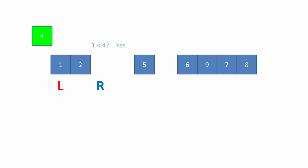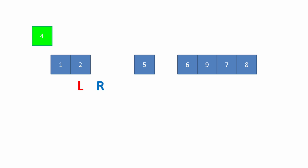And we advance the left pointer. We ask: is two less than four? The answer to this question is also yes, so we simply advance the left pointer. We now have the correct position for our pivot value, which can be slotted into place.